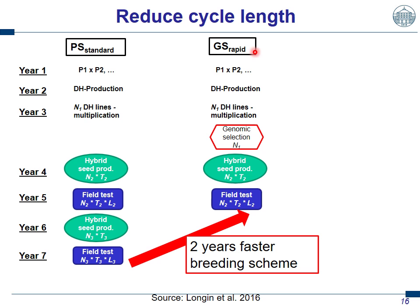We compare a breeding scheme using genomic selection. We assume we make a genomic selection directly after nursery, before the hybrid seed production starts, because hybrid seed production in wheat is very expensive. We further assume that this genomic selection is as good as roughly a yield test, and thus we say using genomic selection we can stick to only one year of yield testing. In this case, we would be two years faster than the phenotypic standard scheme.